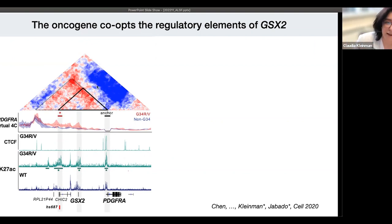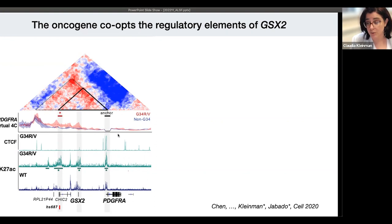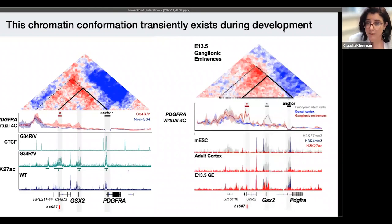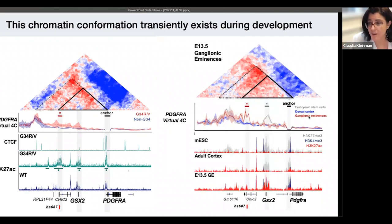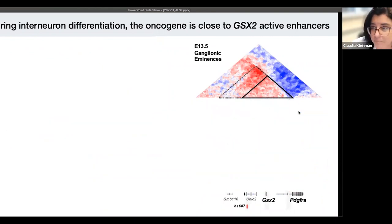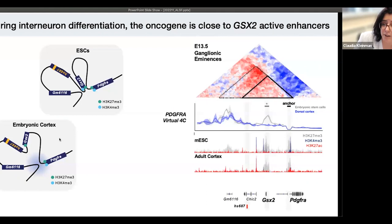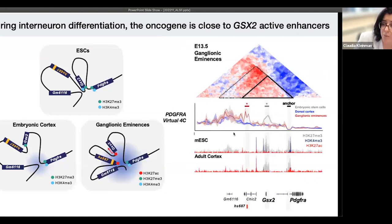If the model is correct, this configuration should happen specifically in the cell of origin — the ganglionic eminences — and that's exactly what we saw when we profiled those. A loop forms between PDGFRA and GSX2 very early in embryonic stem cells, is lost in the embryonic cortex, and forms again with enhancers in the embryonic ganglionic eminences where these tumors arise. So the vulnerability is given by the epigenome conformation of the lineage of origin.